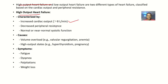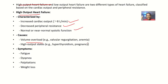In high output heart failure, cardiac output is more than eight liters per minute, there is decreased peripheral resistance, and there is normal or near-normal systolic function. The causes can include volume overload from different parts of the body, such as valvular regurgitation and anemia. In valvular regurgitation, the valves regulating the flow of blood from the atria into the ventricles are not competent.